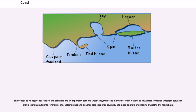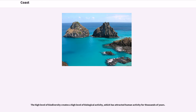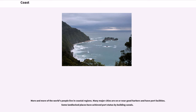The coast and its adjacent areas offshore are an important part of a local ecosystem. The mixture of freshwater and saltwater — brackish water — in estuaries provides many nutrients for marine life. Salt marshes and beaches also support a diversity of plants, animals and insects crucial to the food chain. The high level of biodiversity creates a high level of biological activity, which has attracted human activity for thousands of years. More and more of the world's people live in coastal regions.